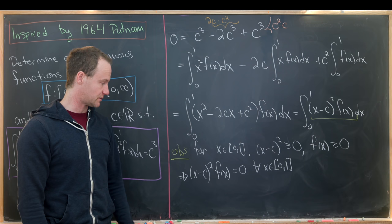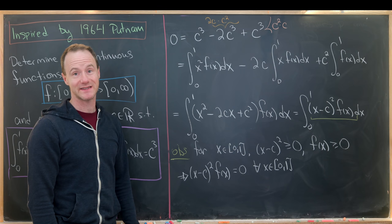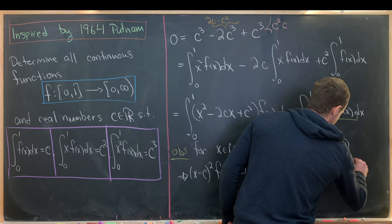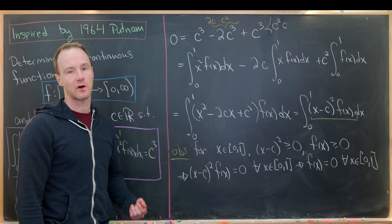But let's notice that x - c is only 0 at the point c. But if this is always 0 at the point c, but this product is 0 for all x between 0 and 1, that means our function f(x) is in fact equal to the 0 function. So in other words, f(x) equals 0 for all x between 0 and 1.